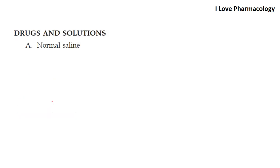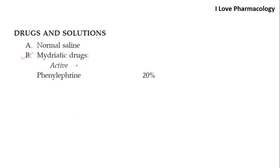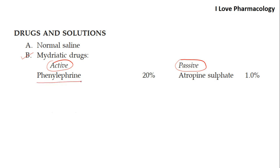You need normal saline for the control eye. For mydriatic drugs, there are two types of mydriasis: active mydriasis and passive mydriasis. The drug responsible for active mydriasis is phenylephrine, which acts on alpha-1 receptors. Passive mydriasis is produced by atropine sulfate and its derivatives, which act on M3 receptors — specifically blocking them. This leads to unopposed action on the alpha-1 receptor, producing dilation of the pupil.